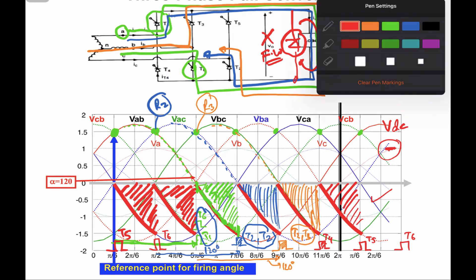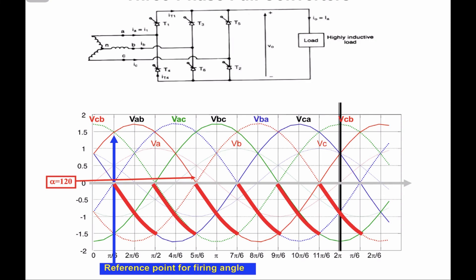We have seen the operation of the fully controlled three-phase rectifier for firing angles of 30°, 60°, 90°, and 120°, and observed that output voltage is controlled by changing the firing angle. These gate pulses are applied from your microcontroller or processor — the brain of your control. You need the reference points; once you have those and the waveforms, you can calculate the firing angle and use PWM channels, counters, and timers of your microprocessor to implement the controller.